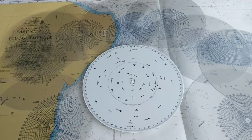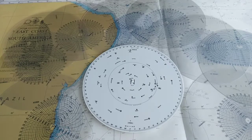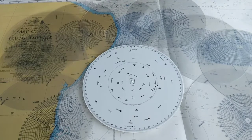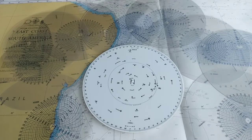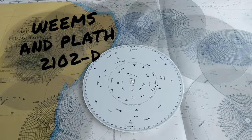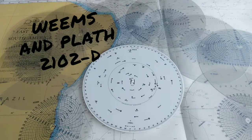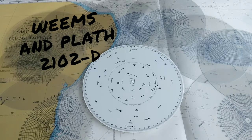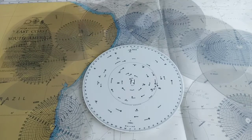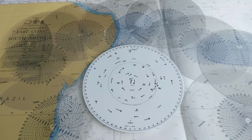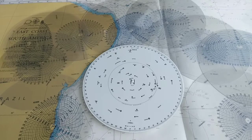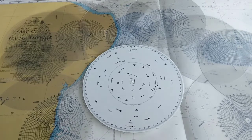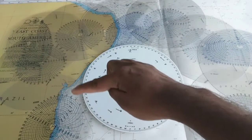At this moment I am using the Williamson path star finder model number 2102/D. This star finder comes with a star chart and 10 templates.